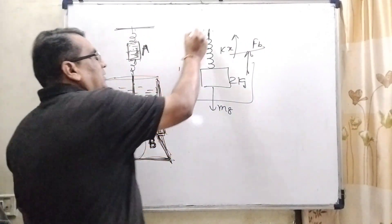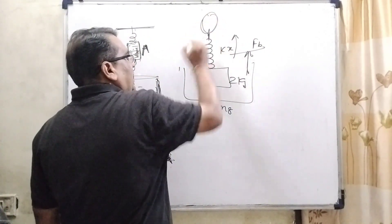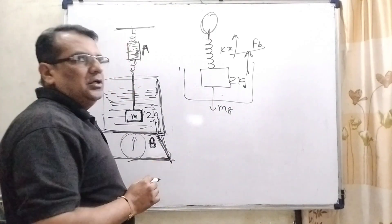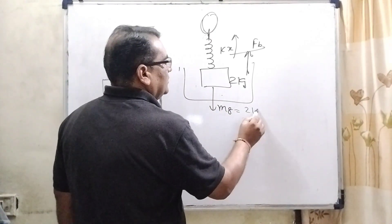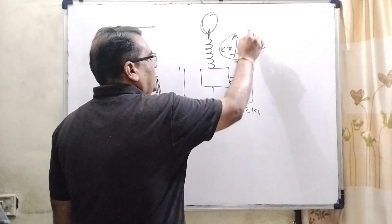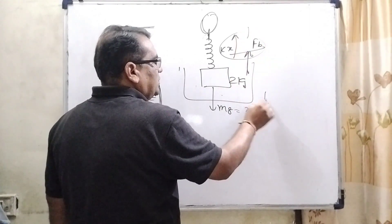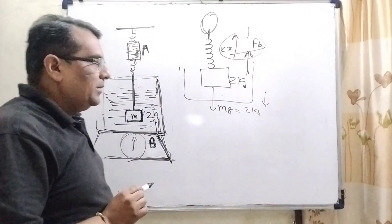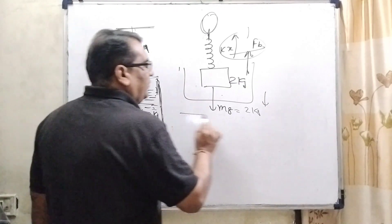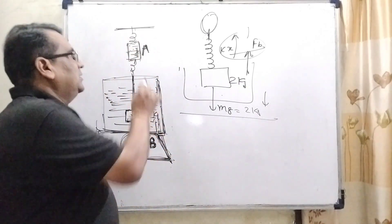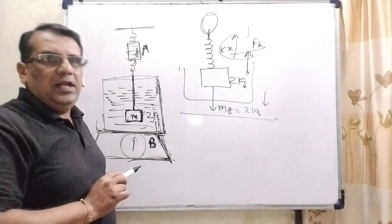So, therefore, this reading of this spring balance shows less than 2 kg. Because two forces at upper direction, only one force at downward direction. So, here first concept is clear that is spring balance shows less than 2 kg.